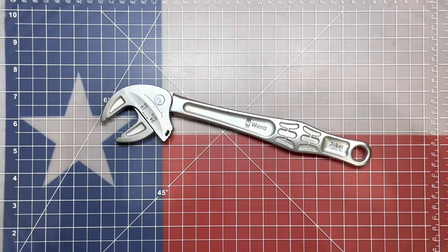This is the Wera Joker 6004 series self-adjusting spanner wrenches. I highly recommend them, especially to mechanics who are always working in very tight locations. My name is Ben. You've been watching the Texas Tool Crib. I appreciate you watching. I'll see you in the next one.